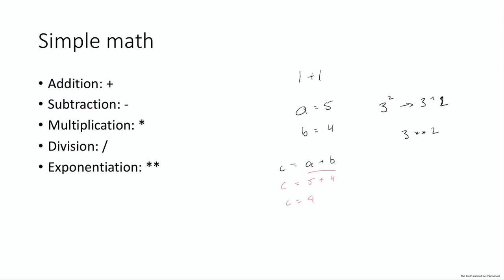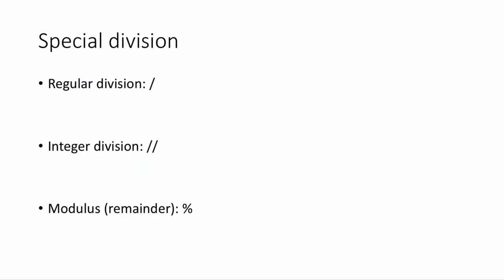So that's all really simple, and probably something you could take for granted. But there is something a little bit more interesting about division. So let's talk a little bit about division in Python and programming in general. We have these three operators — at least in Python, and in a lot of other languages as well — that all have something to do with division, but they're all a little bit different. Let's start with the first one: regular division. It's exactly what you would expect. For example, if I do three divided by four, it would be 0.75. And if I do five divided by four, it would be 1.25.